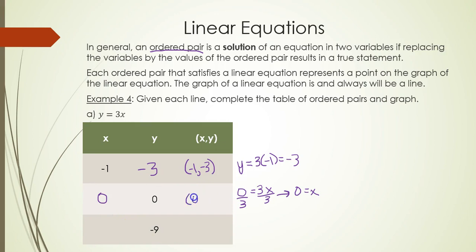(0, 0) is the ordered pair. Next, when y is -9, so I have -9 = 3x. Divide both sides by 3, and then I'll get -3 = x. So there's another ordered pair.